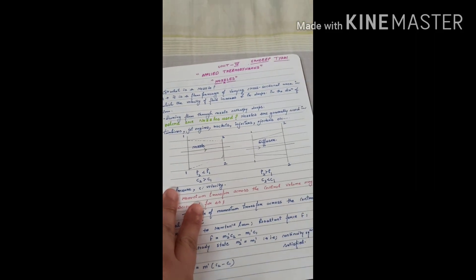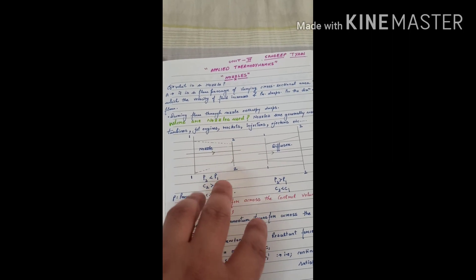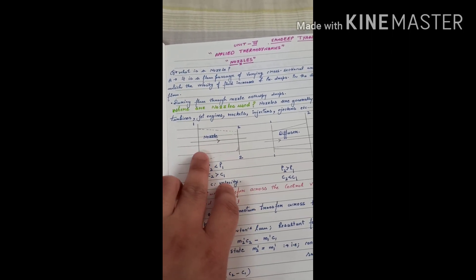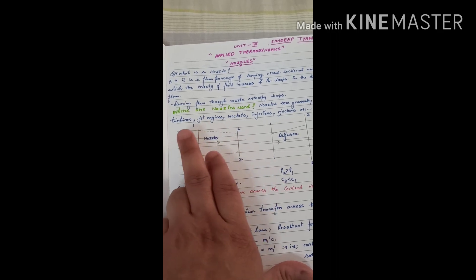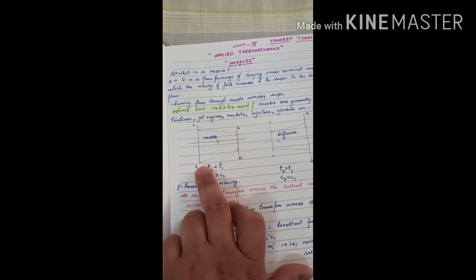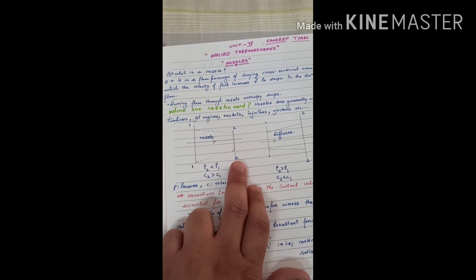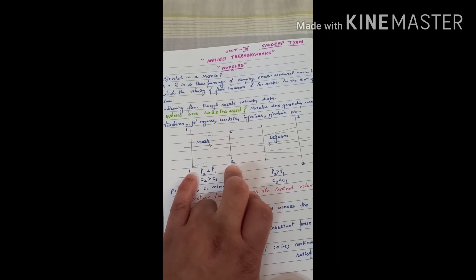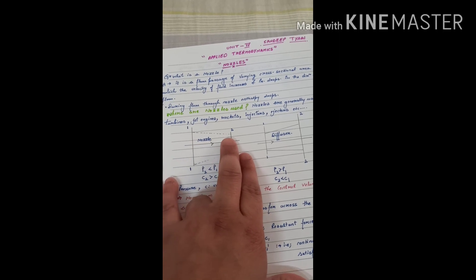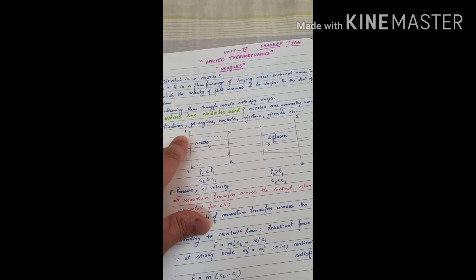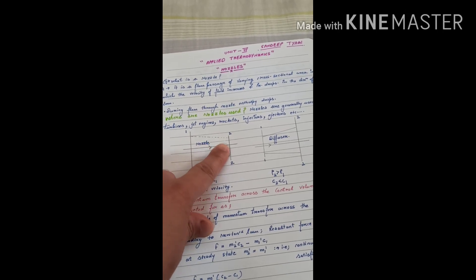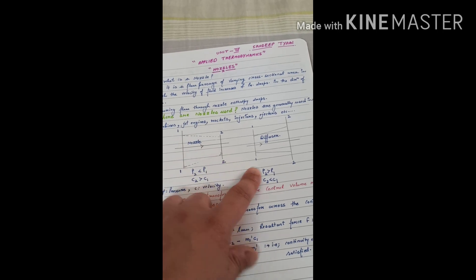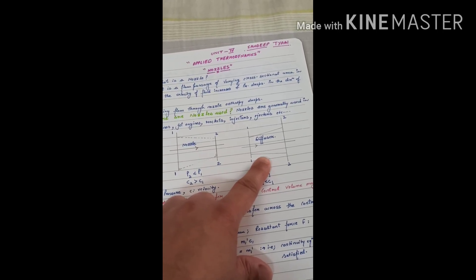A nozzle is basically a device in which the cross-sectional area reduces from the entry point to the exit point. If this is the entry point, let us call it point 1, and the exit point is point 2, then between these two points the fluid flows and the cross-sectional area reduces. The cross-sectional area at the entry is much greater than at the exit.